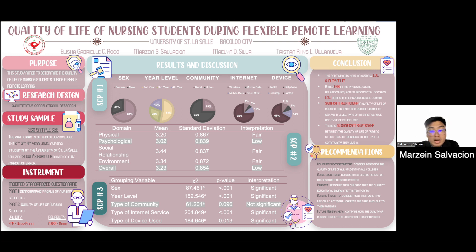The participants of the study are second, third, and fourth year nursing students currently enrolled at the University of St. Nassau. In computing the sampling size, Slobin's formula was utilized based on a 5% margin of error and a total population of 740, determining that 260 nursing students would be the sample size. It was calculated that 101 second-year students, 96 third-year students, and 63 fourth-year students were asked to participate.